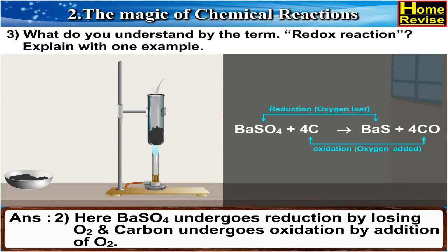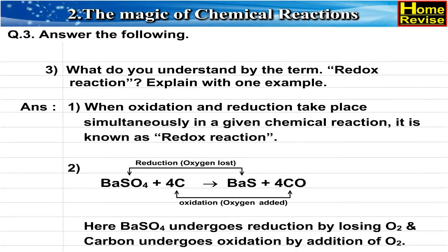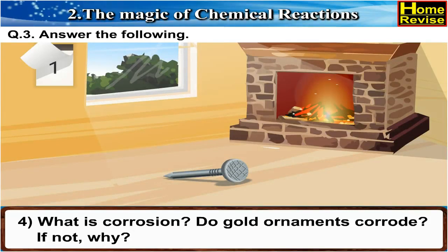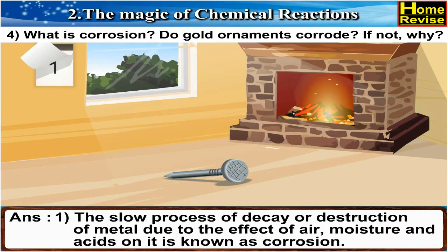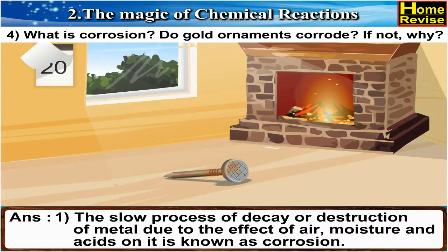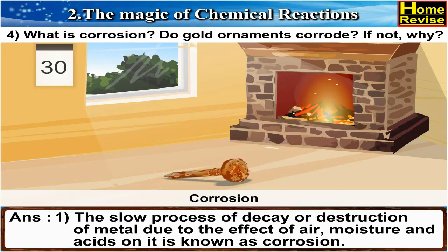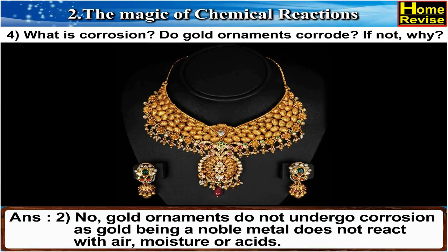4. What is corrosion? Do gold ornaments corrode? If not, why? Answer: The slow process of decay or destruction of metal due to the effect of air, moisture, and acids on it is known as corrosion. No, gold ornaments do not undergo corrosion, as gold being a noble metal does not react with air, moisture, or acids.